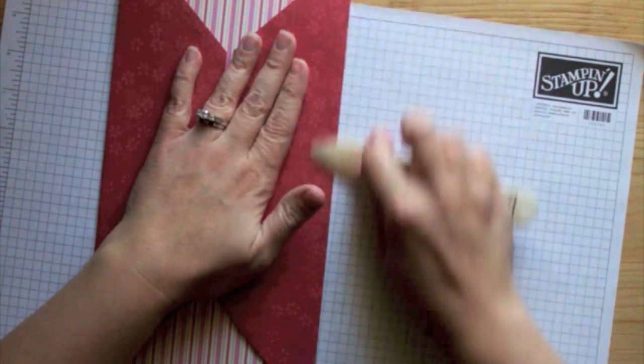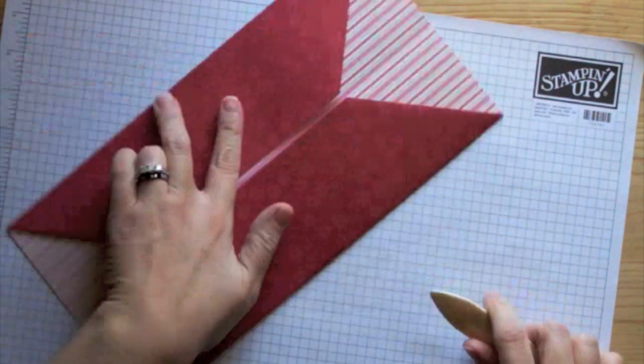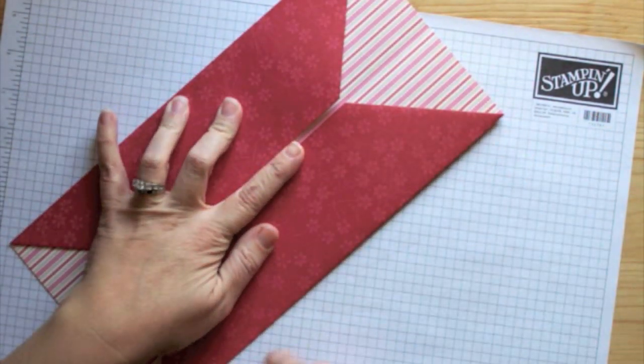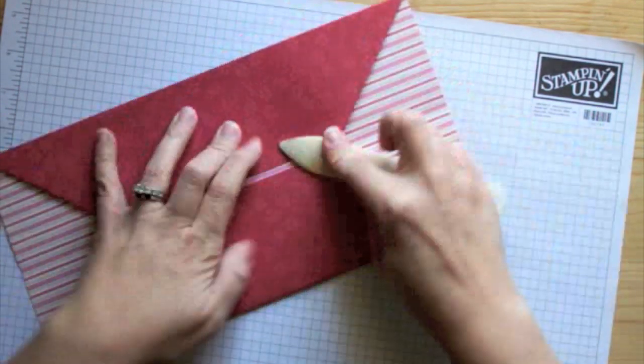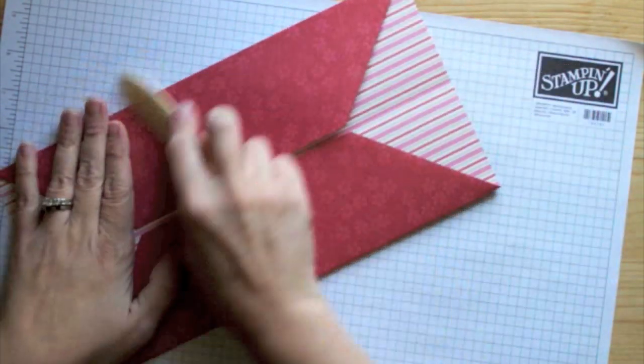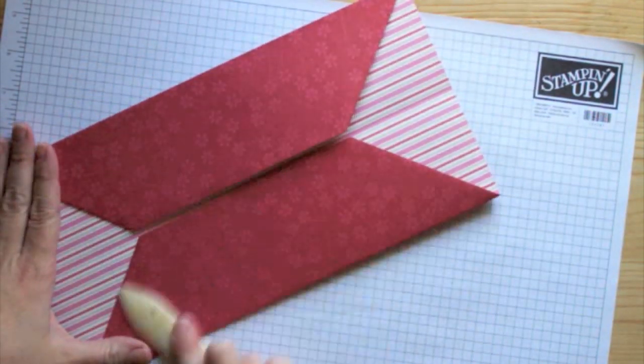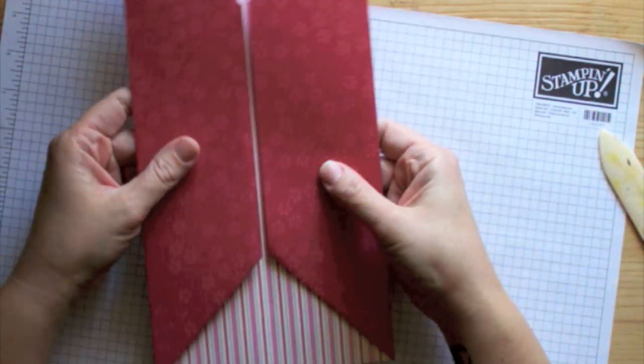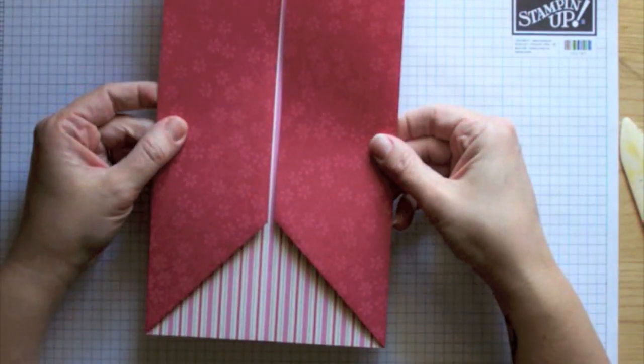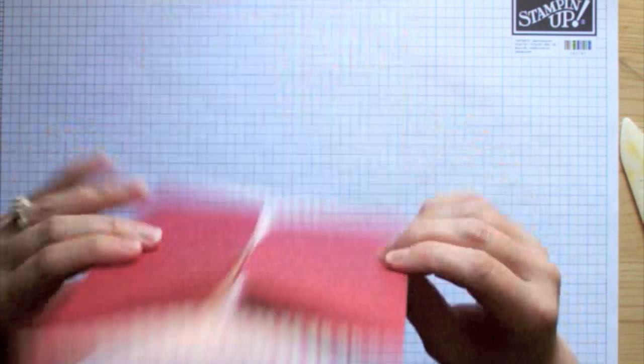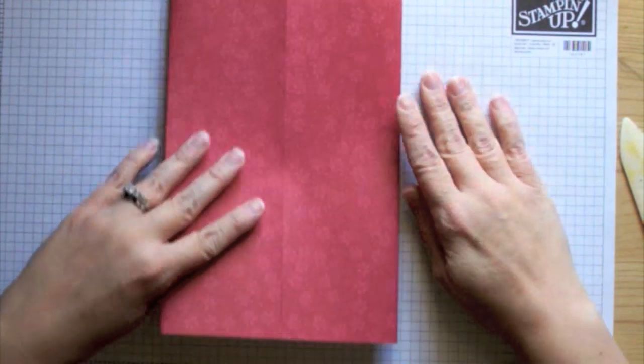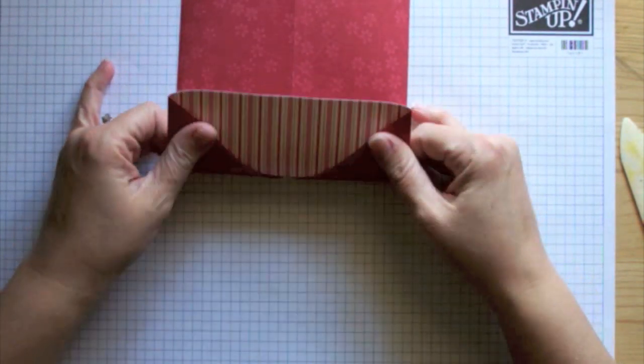Take your bone folder. You can see right there, I had it over too far a little bit. I didn't want it to lay nice and flat for me. Take your bone folder and just make sure everything is down nice and flat. At this point, you're going to take your paper, you're going to flip it over, and you're going to want to fold this part back.